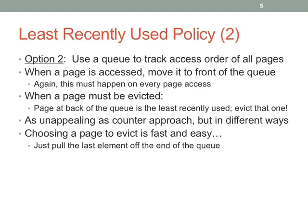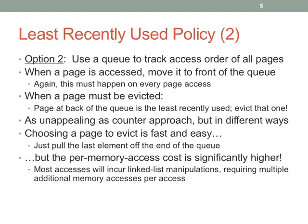Choosing a page to evict is fast with the queue approach. But accessing is a lot more expensive because you have to update the queue every single time. Most accesses incur linked list manipulations. Even if the processor is clever and skips updates for consecutive accesses within the same page, you still need to manipulate a singly linked list — at least two or three pointers — which is expensive.